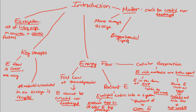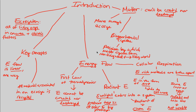This idea of cycling energy and cycling processes will show up again and again in ecosystem ecology. Biogeochemical cycles are the processes by which matter cycles from the non-living world to the living world and back again — back and forth between the living and non-living worlds. This will be looked at in more detail in later flow charts.